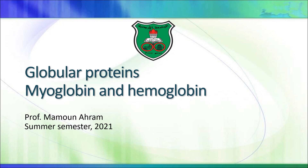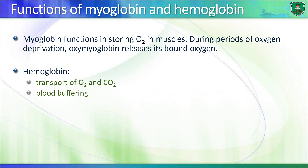In this lecture, we will be talking about two proteins: myoglobin and hemoglobin, as examples of globular proteins. Before we proceed into the structures of these two proteins, let me tell you what their functions are. The main function of myoglobin is to store oxygen in muscles. Basically, in cases of hypoxia — when oxygen pressure is very low in muscles — myoglobin releases oxygen.